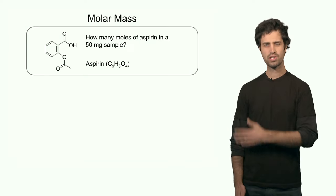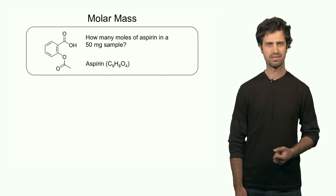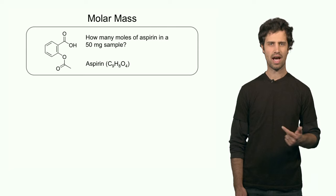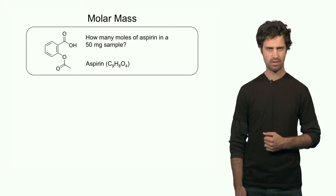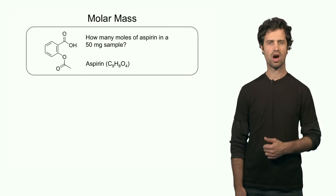The molar mass is a very important quantity in chemistry calculations. Let me show you a couple of examples of how we can use the molar mass to do some important mass and quantity relationships. The first example concerns the molecule aspirin. Aspirin is an organic molecule — it contains carbon, hydrogen, and oxygen. The molecular formula of aspirin is C₉H₈O₄.